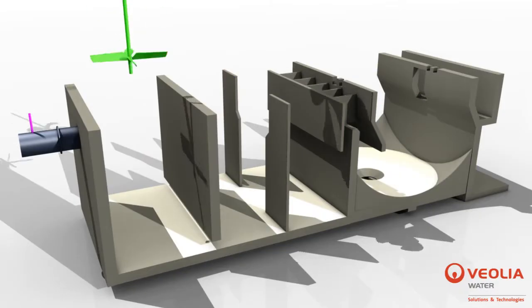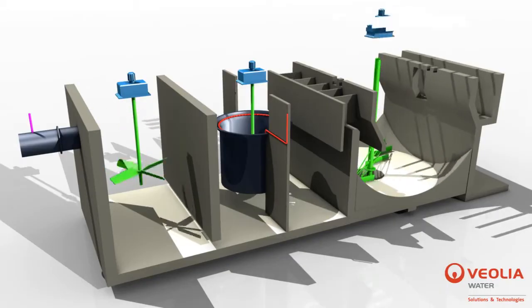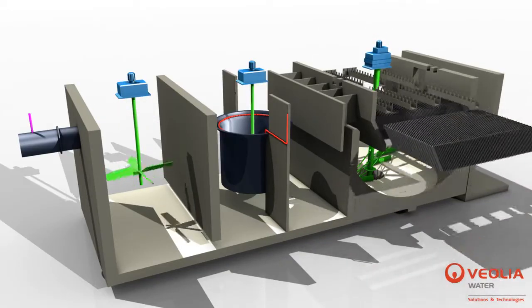Actiflow Turbo consists of a coagulation tank and a flocculation tank with a turbomix draft tube, followed by a settling tank equipped with a bottom scraper and lamella.